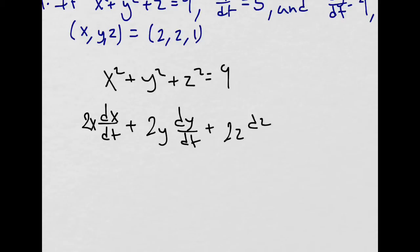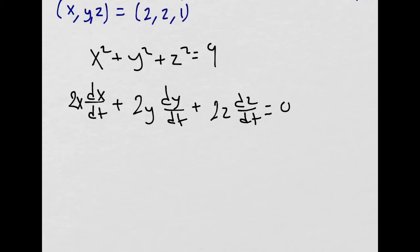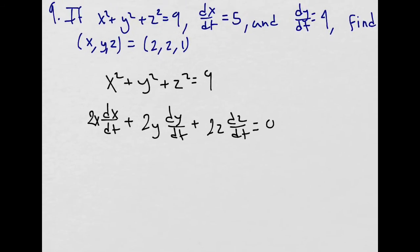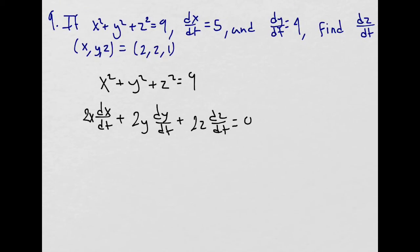dz/dt equals 0. The derivative of any constant is 0. Now we are given the information for dx/dt and dy/dt.